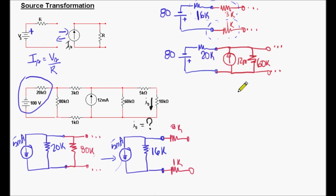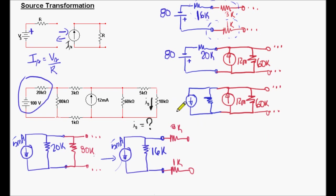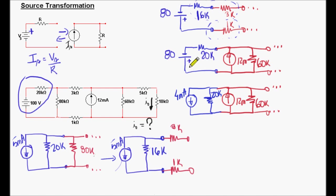We look at this piece of circuit here and think: can we do anything with them? No, there is no way we can combine those components. So we apply source transformation again. The resistor value is the same — it is 20k. The current source value will be 80 volts divided by the resistor value 20k, giving us 4 milliamps. And as I said before, the arrow of the current source must point towards the positive terminal of the voltage source — I have the positive terminal on this side.